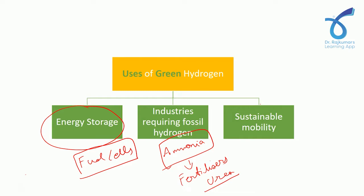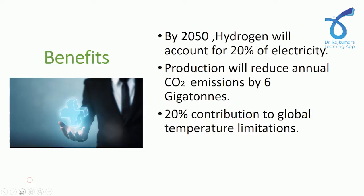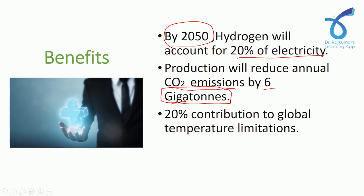The third use is sustainable mobility. Hydrogen is used in fuel cells powering many vehicles, and the future will see green hydrogen powering mining vehicles, trains, aircraft, lorries, buses, and even maritime transport. As for the benefits of adopting green hydrogen: it is projected to account for 20% of electricity by 2050, reduce CO2 emissions by 6 gigatons, and limit 20% of global temperature rise.